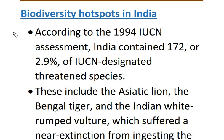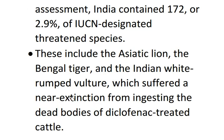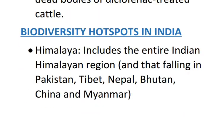Now let's discuss about biodiversity hotspots in India. According to the 1994 IUCN assessment, India contained 2.9% of IUCN-designated threatened species. The threatened species includes the Asiatic lion, Bengal tiger, and Indian white-rumped vulture. The Indian white-rumped vulture especially faces extinction because of the ingestion of dead bodies of diclofenac-treated cattle. We have also provided a separate video lecture on diclofenac and the decline of vultures in the environmental ecology section.